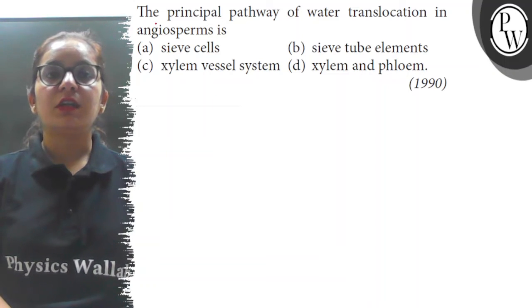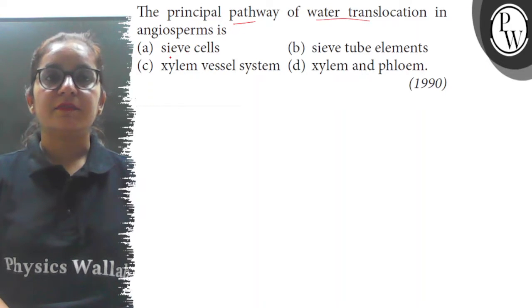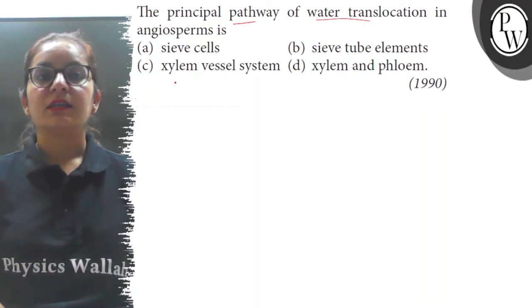Hello students. The question is: the principal pathway for water translocation in angiosperms is (a) sieve cells, (b) sieve tube elements, (c) xylem vessel system, and (d) xylem and phloem.